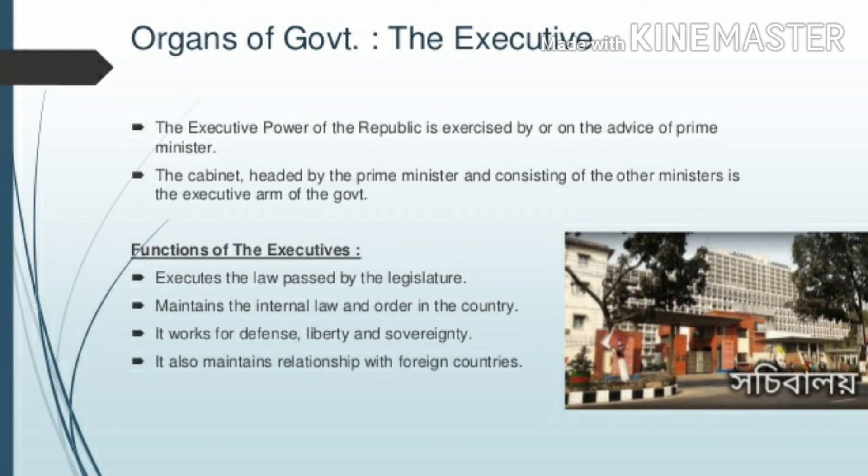The Executive executes the law — like the President and Governor of the states. For example, a lockdown order is the work done by the executive only. The executive executes the laws created by the legislature.